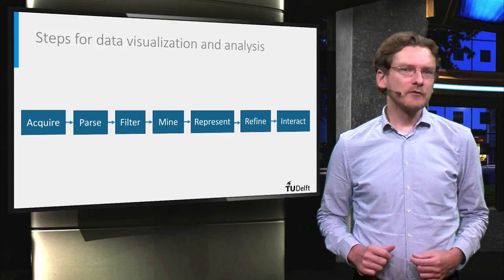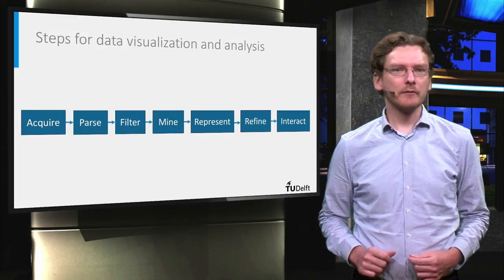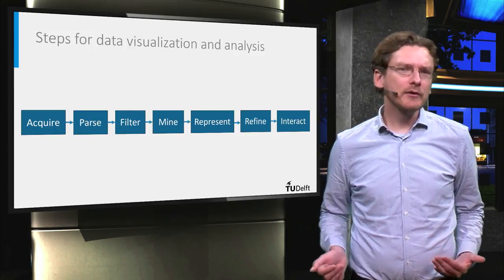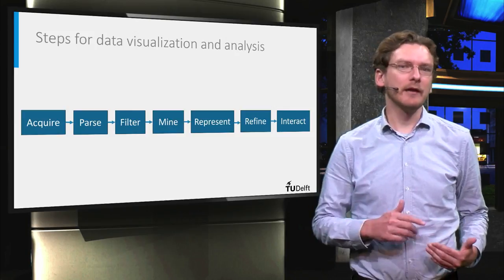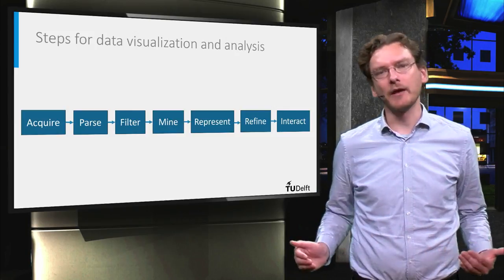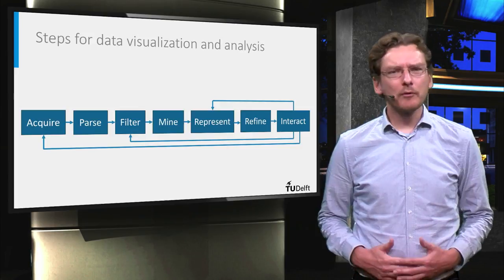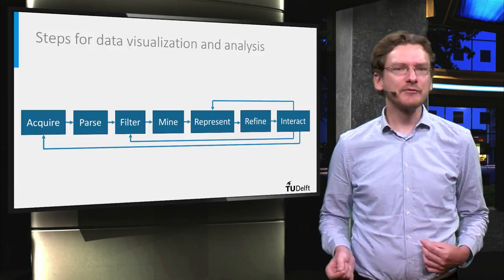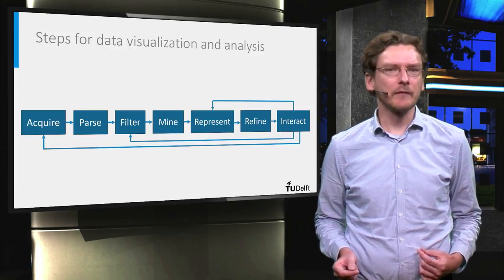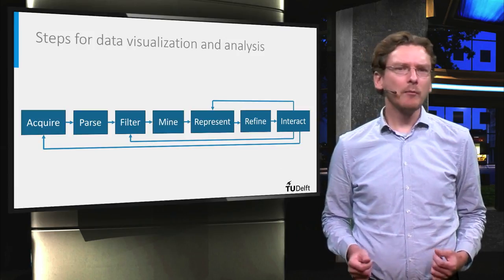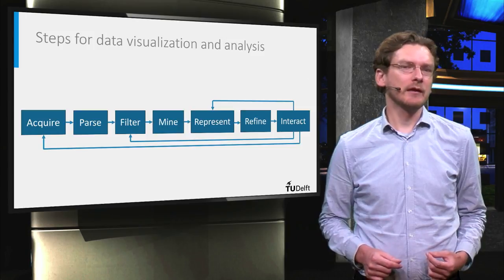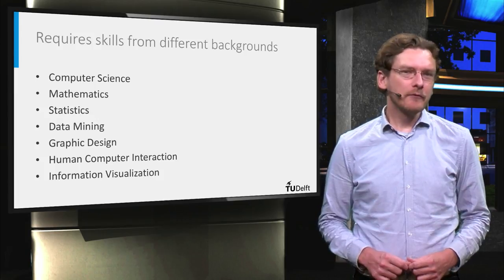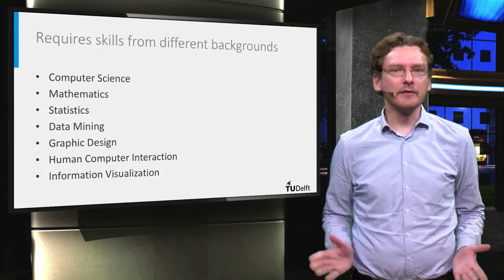While you can think of these steps as being part of a linear process where once you're done with one step you can move on to the next, you can also conceive of situations where each of these steps can loop back and change the output of the previous steps. For example, while people are interacting with visualizations, they may filter out a different subset of the data or select options that alter how the visualization represents the data. People may even want to load in new datasets given something that they discovered using these later steps.